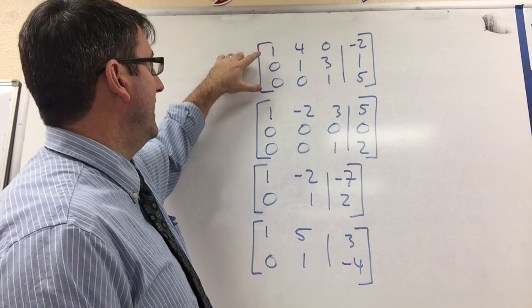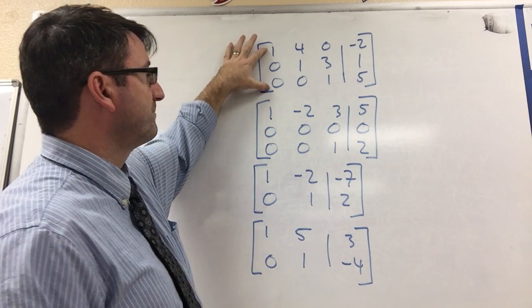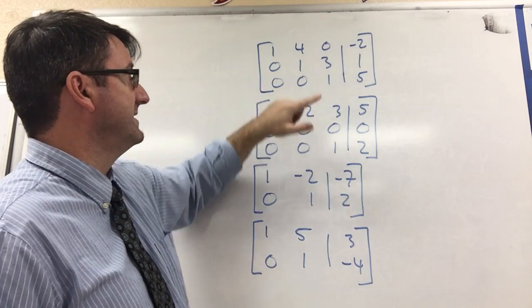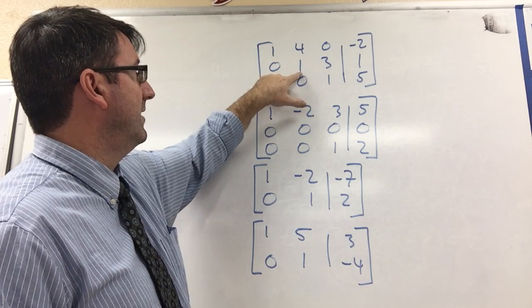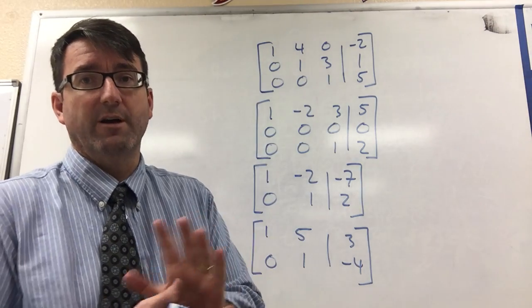matrices, you can see for each of these rows here, the first entry that we come across that's not zero is always one. There's a one here, a one here, a one here, and all the numbers in front of it are zero.